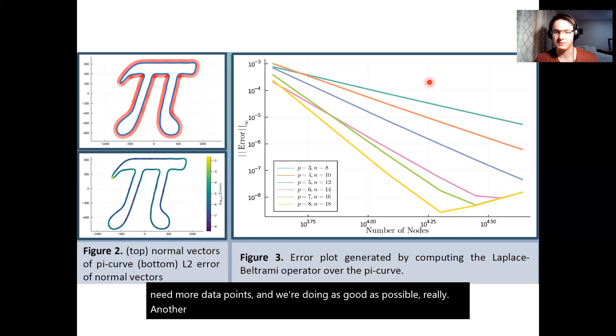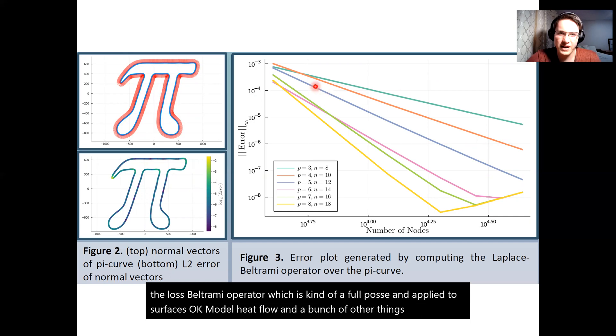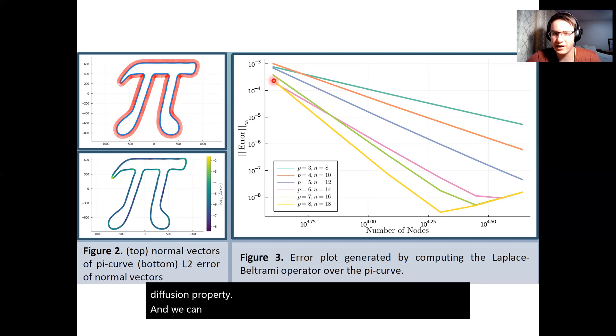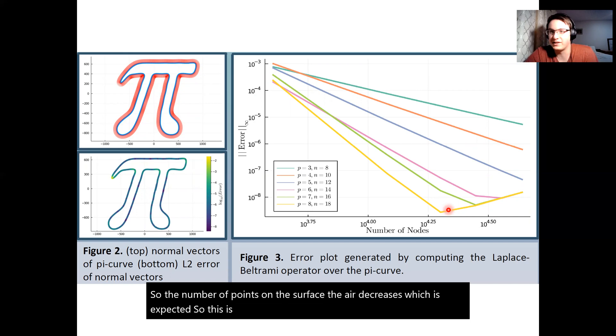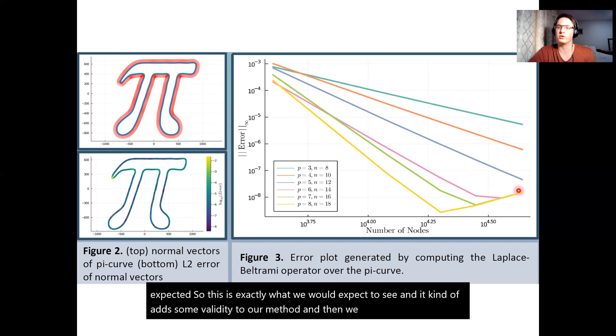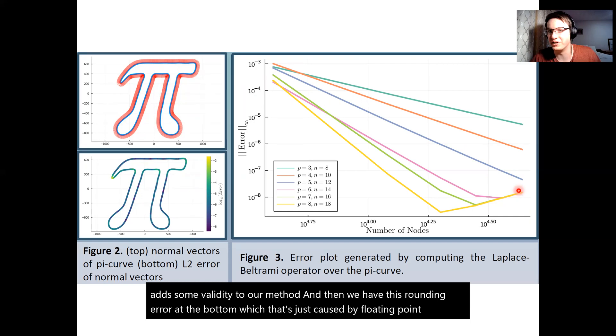Another thing you can do though is also compute things such as the Laplace Beltrami operator which is kind of a Laplace applied to surfaces so it can model heat flow and a bunch of other things, any diffusion property. And we can see that our method as we increase the number of nodes, so the number of points on our surface, the error decreases which is expected. So this is exactly what we would expect to see and it kind of adds some validity to our method. Now we have this rounding error at the bottom which that's just caused by floating point arithmetic in a computer and we can remove it if we need to.